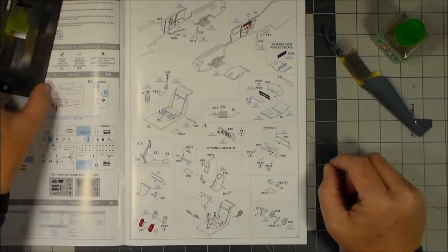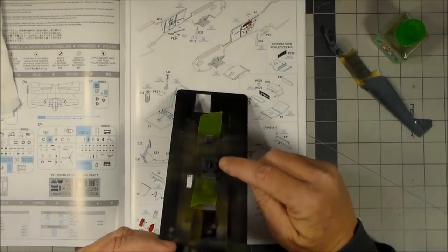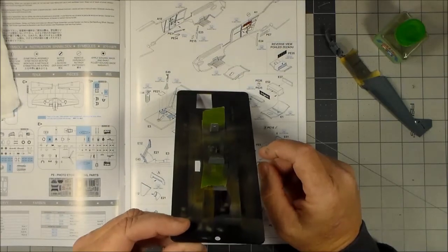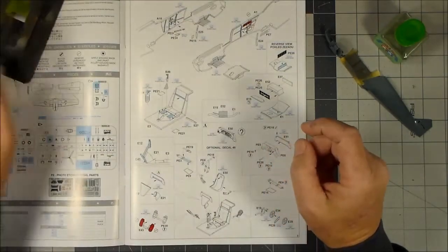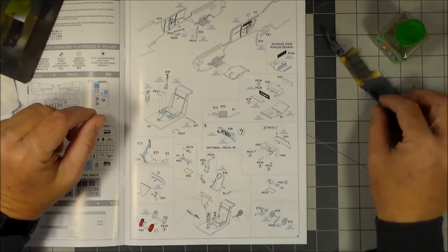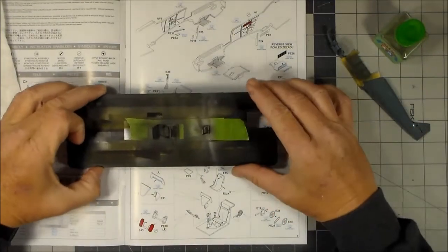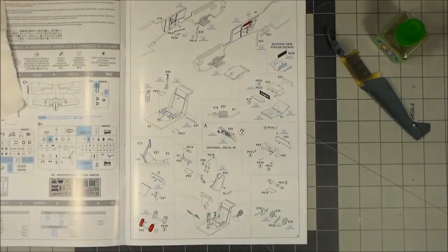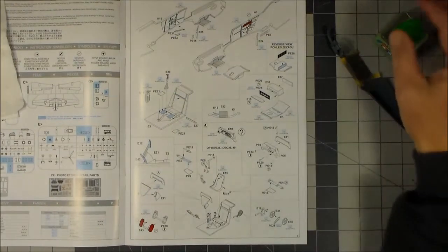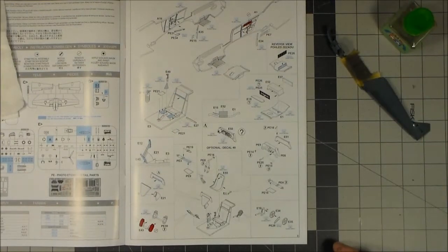There's another photo etch part that goes here and on the other side. I'll paint up the control stick and then I will assemble the photo etch instrument panel to put here in the cockpit. Then I will do the seat belts on the seat, the photo etch seat belt.